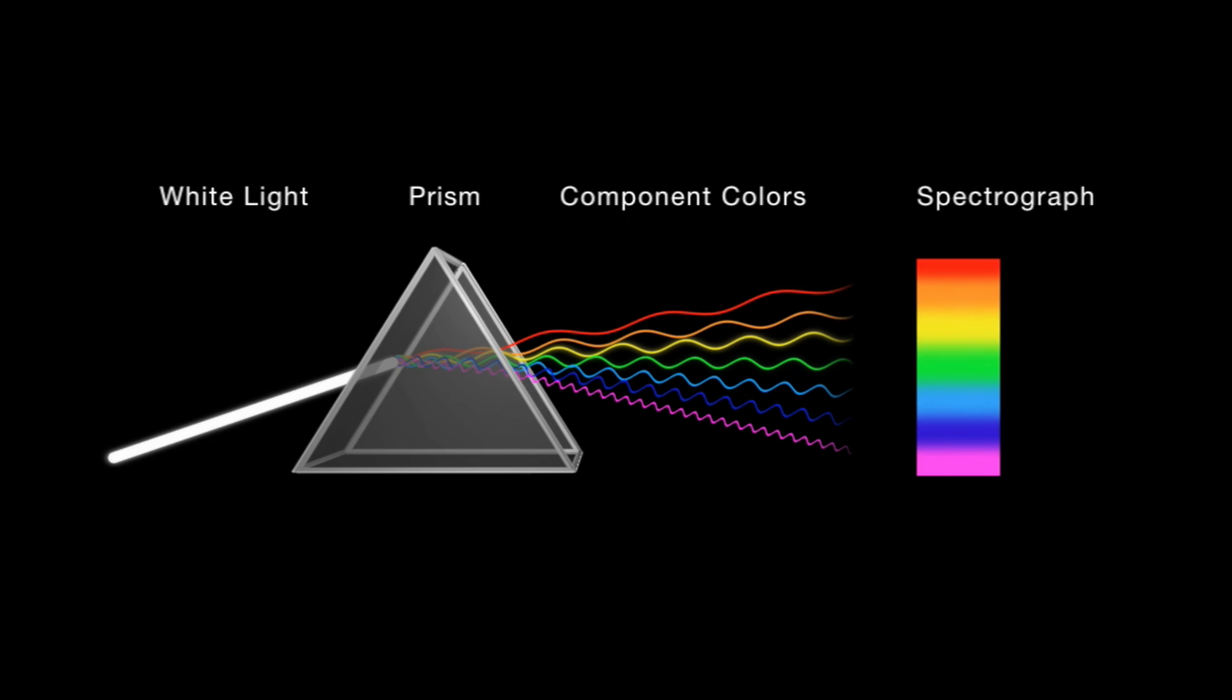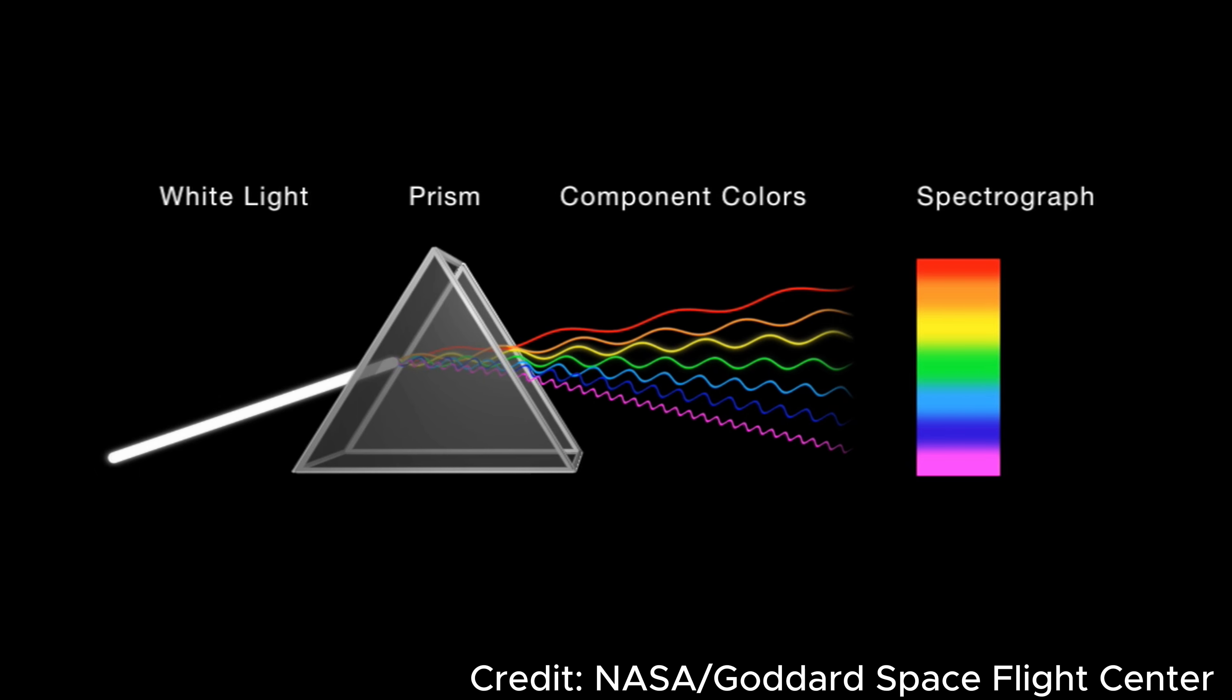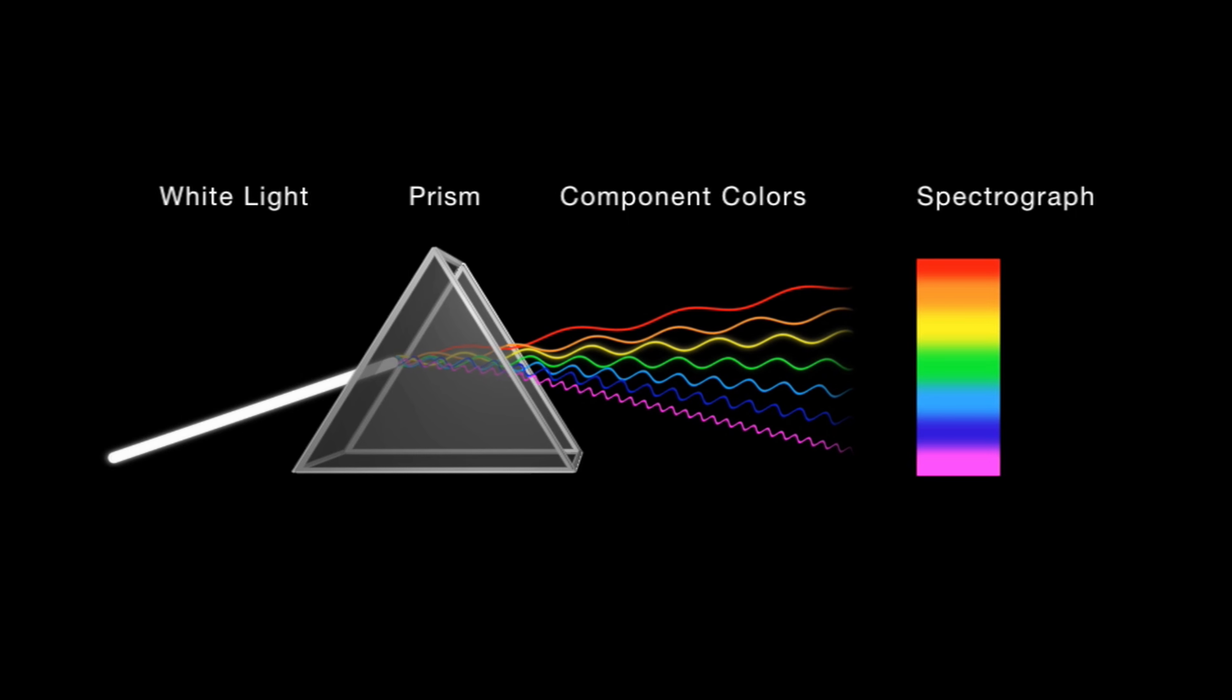One way to observe the colors of sunlight is by using a prism. When white light passes through a prism, it is separated into its constituent colors.